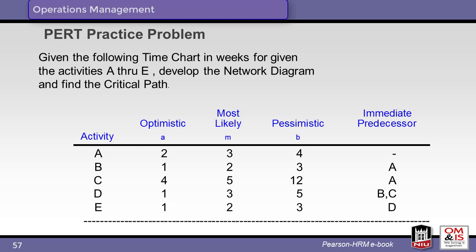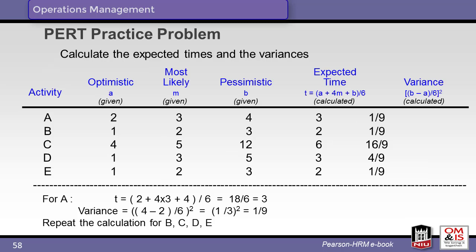To reinforce the previous concepts, let's go through an example with a new project and all new activities. There are five activities along with their respective durations and predecessors listed. Follow along and create the calculations, tables, and diagrams for yourself. Given the data from the previous slide, we can calculate the expected time and variance for each activity. The equations are shown for activity A as a reminder — simply repeat the process for the remaining activities.